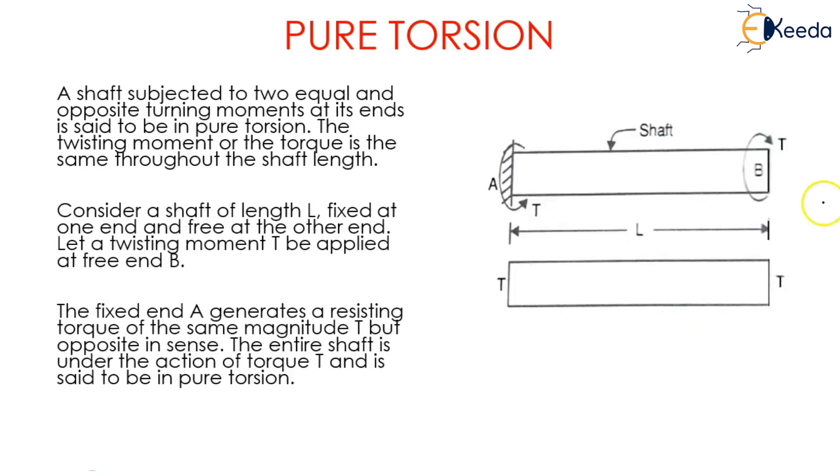Consider a shaft of length L fixed at one end and free at the other end. Let the twisting moment T be applied at end B. So we are applying a moment T at the free end. Over here I have applied the moment at end B.